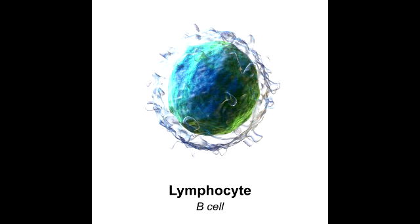Memory cells are similar to plasma cells, but they are longer lasting but less active. These are cells that remember an antigen, so next time that antigen is encountered again, the immune response happens much quicker.